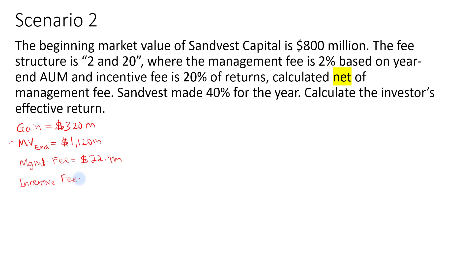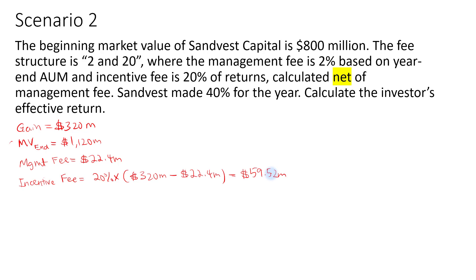Now for the incentive fee, it will be 20% multiplied by the gain of $320 million minus the management fee of $22.4 million — since this is net of management fee. That gives us $59.52 million. This is lower than scenario one where the incentive fee was $64 million. Adding the management fee and incentive fee, the total fee is $81.92 million.